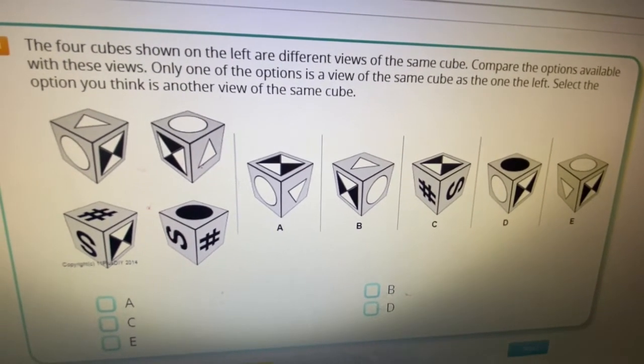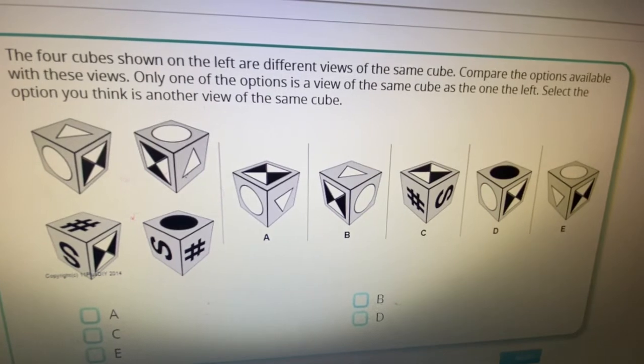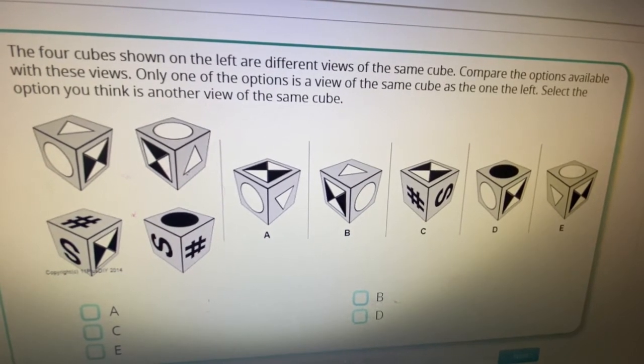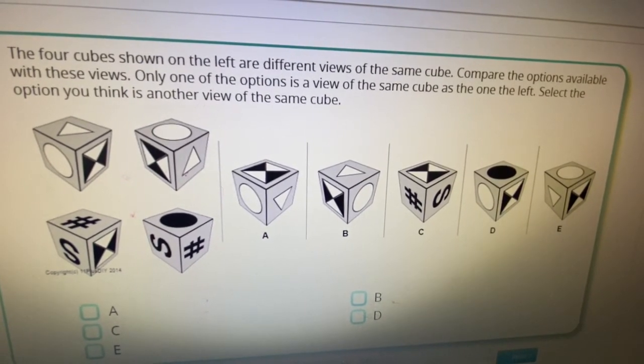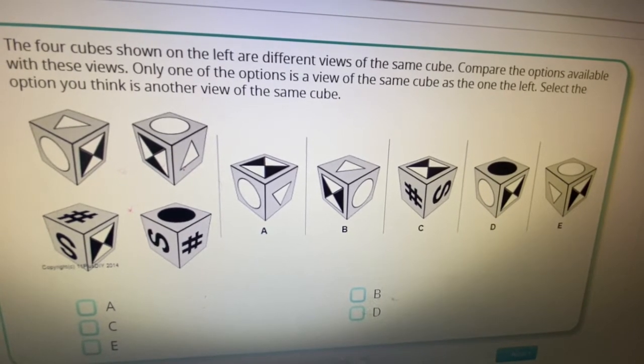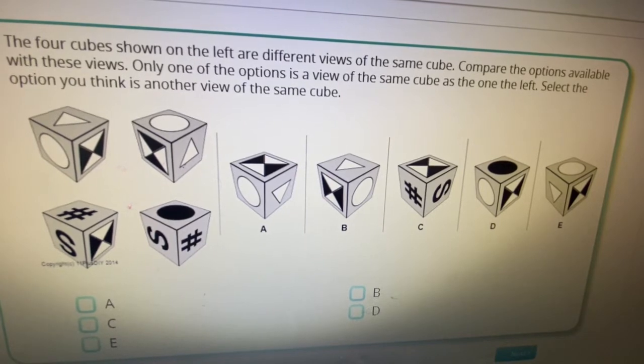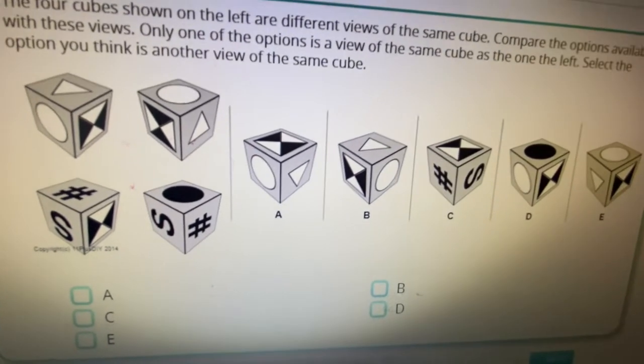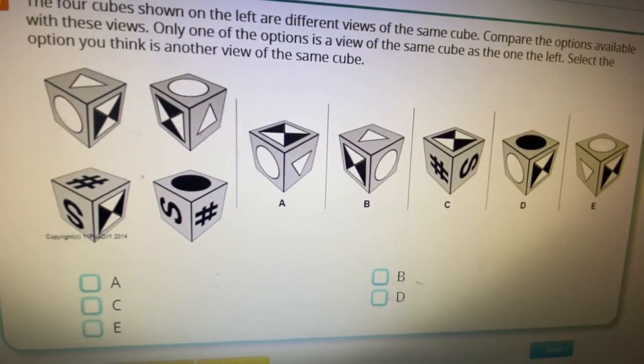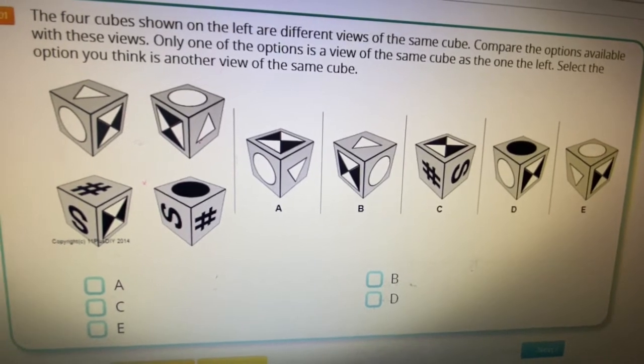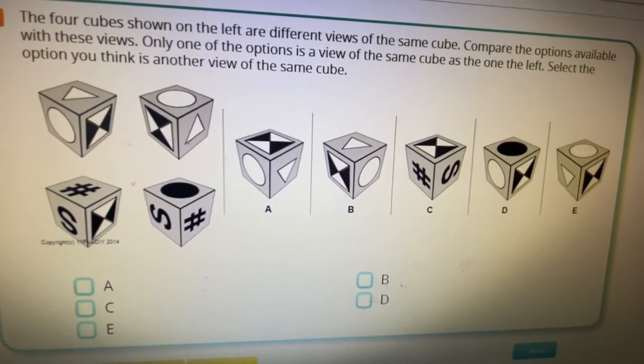Would you read the question, son? The four cubes shown on the left are different views of the same cube. Compare the options available of these views. Only one of the options is a view of the same cube as the one on the left. Select the option you think is another view of the same cube. Can you try this question and see what you think the answer is?